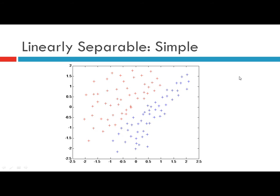Suppose here is a data set. One class is represented by the red dots and red crosses and the other one is represented by the blue crosses. As you can see, this problem is quite simple — a linear boundary drawn like this will separate the two classes. So this is a simple problem and we can clearly see that linear basis functions will solve it.